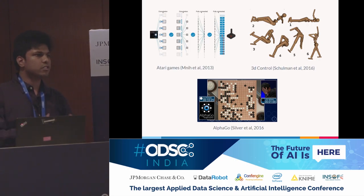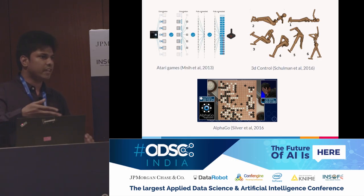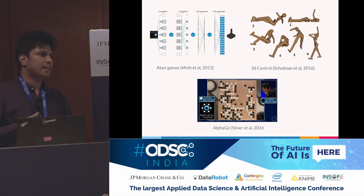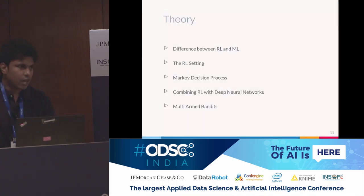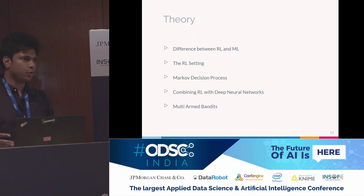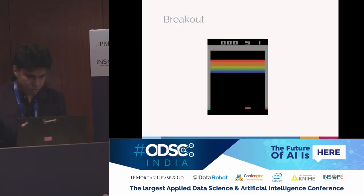DeepMind used deep reinforcement learning to beat the game of Go — or Chinese Checkers — at a level better than the best human. Now I will cover a little bit of the theory of reinforcement learning, starting with the game Breakout.